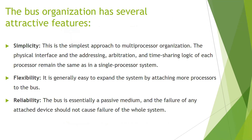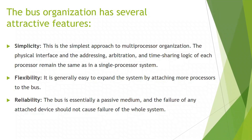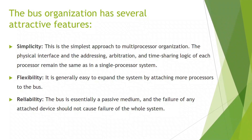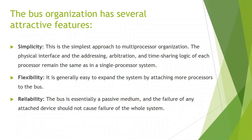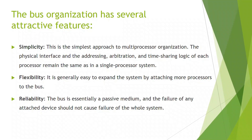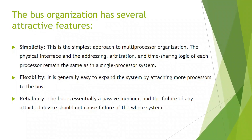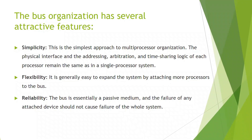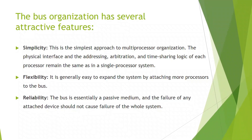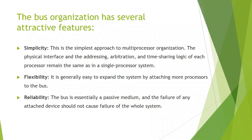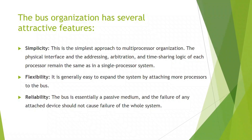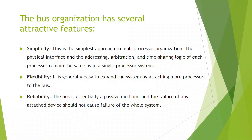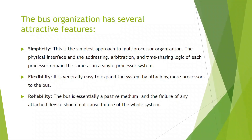The bus organization has several attractive features — three features: Simplicity, Flexibility, and Reliability. Flexibility means it is generally easy to expand the system by attaching more processes to the bus. Reliability means the bus is essentially a passive medium and the failure of any attached device should not cause failure of the whole system.